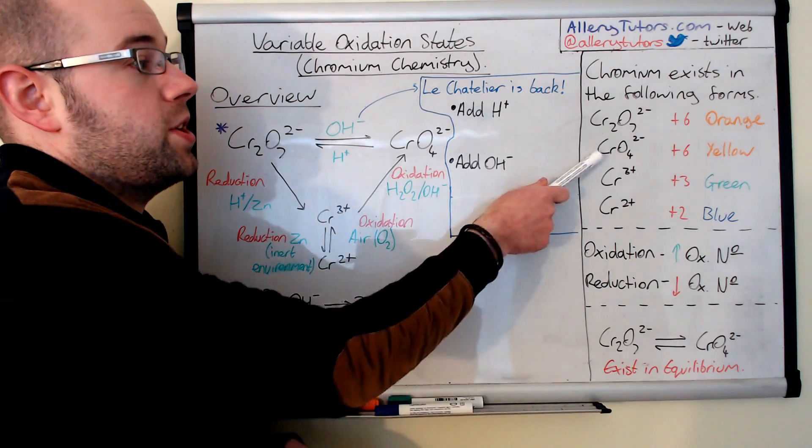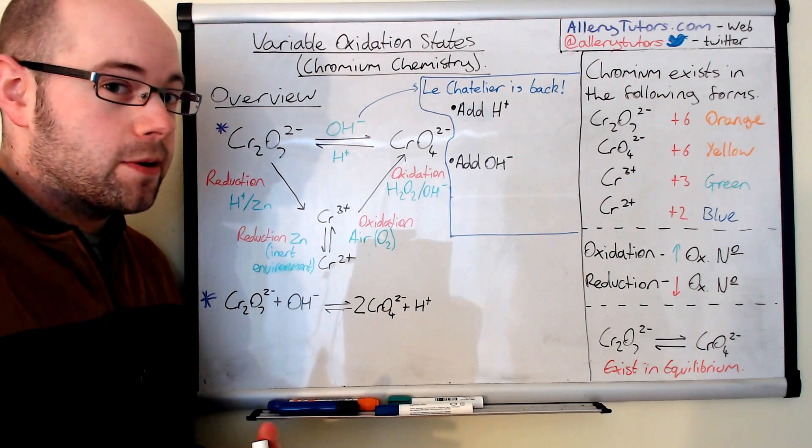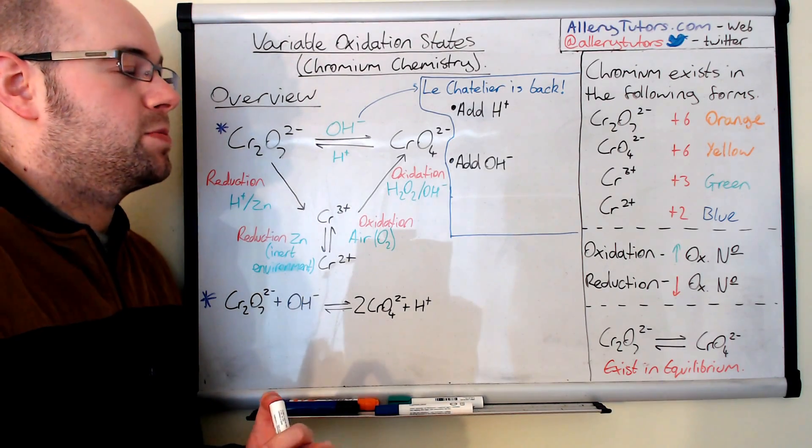And the next one down which is CrO₄²⁻ is called chromate. This is yellow in colour. So it's very similar to the orange but just a bit paler. And it again has an oxidation state of plus six.